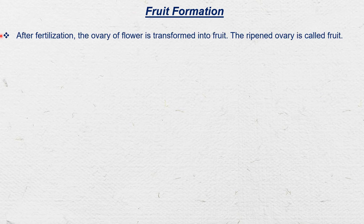Now I will go to the last topic in this chapter: fruit formation. After fertilization, the ovary of the flower is transformed into the fruit. At flowering plants, after fertilization, many changes occur in the ovary, and ultimately the ovule and ovary convert into seed and fruit.